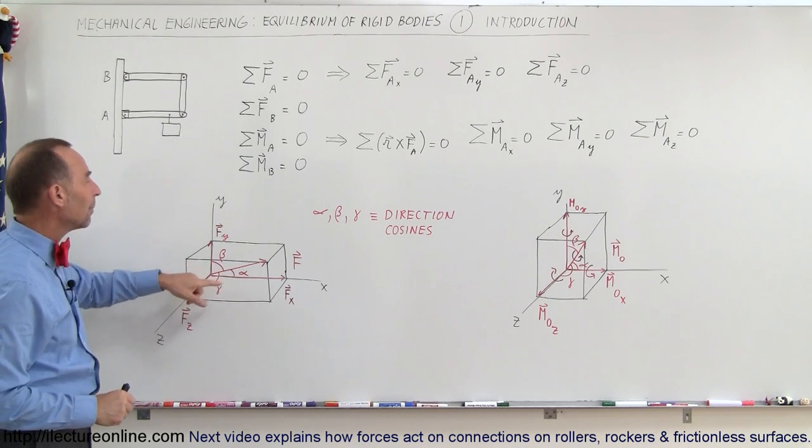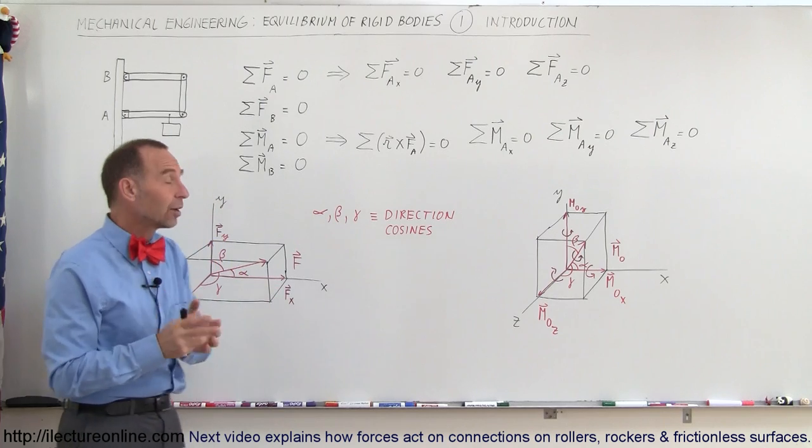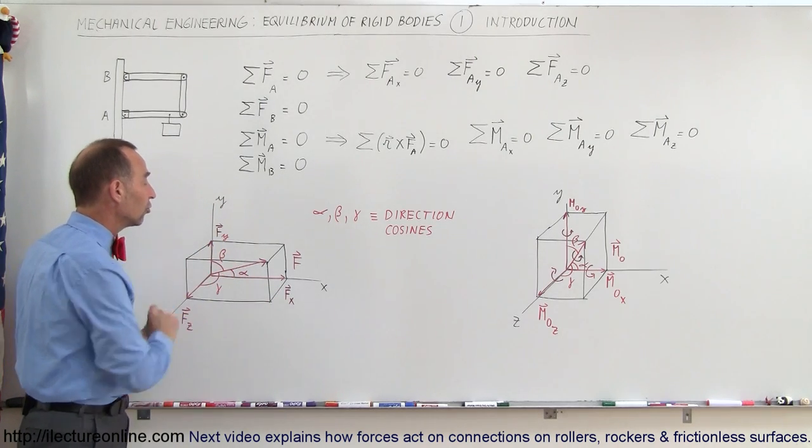cosines alpha, beta, gamma. Those are the angles, but also considered direction cosines.